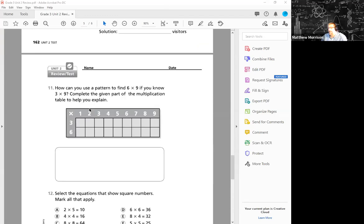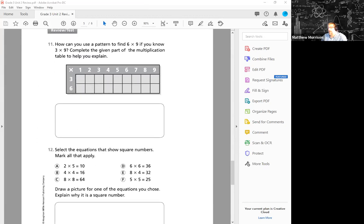So save that picture, we're putting those in, taking a picture of the screen and putting it in our assignment. Now let's scroll down to page 163. Here we're going to be working with patterns. How can you use a pattern to help you find 6 times 9 if you know 3 times 9? If you already know 3 times 9, you have your 3s memorized solid. Complete this part of the multiplication table to help you explain.